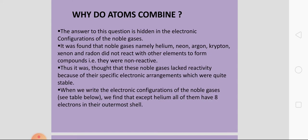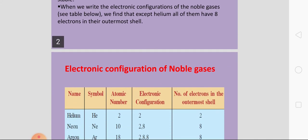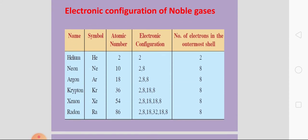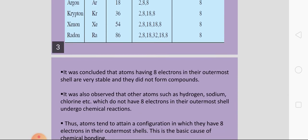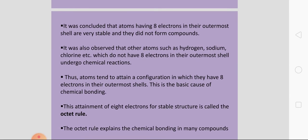They have 8 electrons in their outermost shell. And helium, which is a noble gas, has 2 electrons in its outermost shell. Neon, argon, krypton, xenon, radon — सब में 8 electrons होते हैं। इससे यह conclusion निकला कि ऐसे atoms जिनमें outermost shell में 8 electrons होंगे, वो stable होंगे और वो atoms कभी भी react नहीं करेंगे।